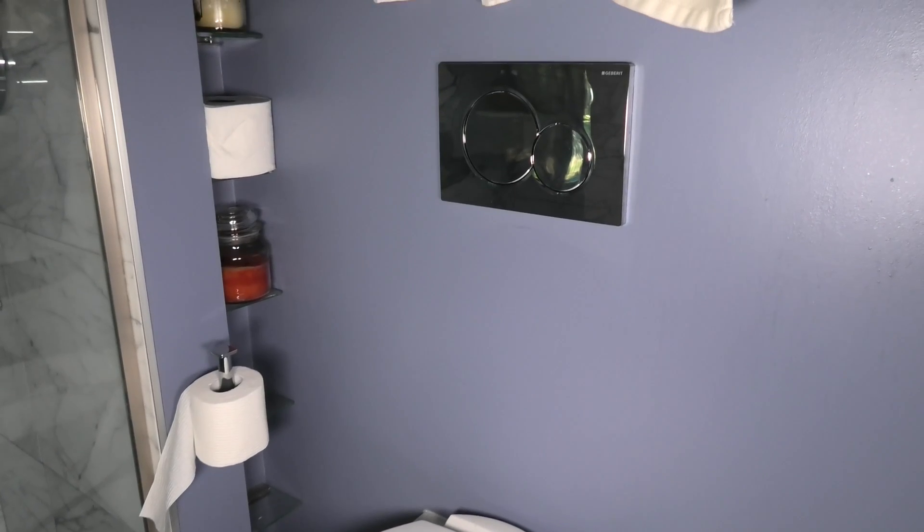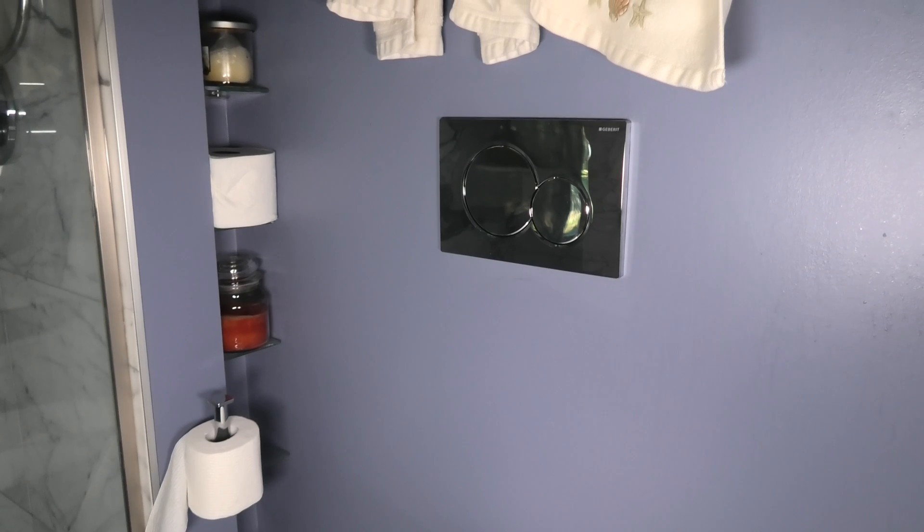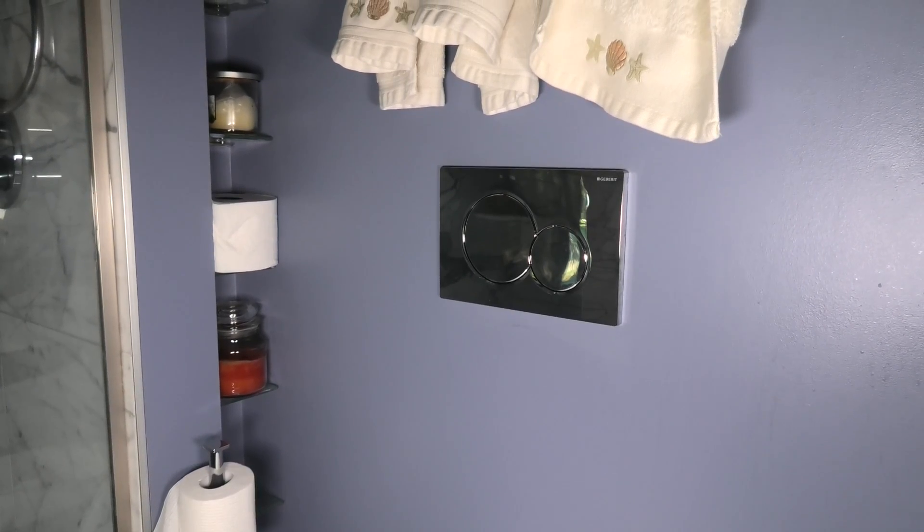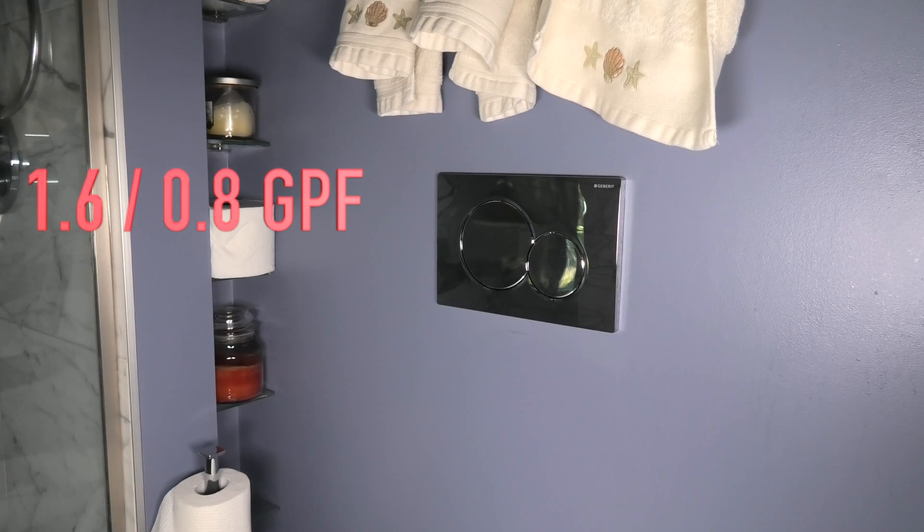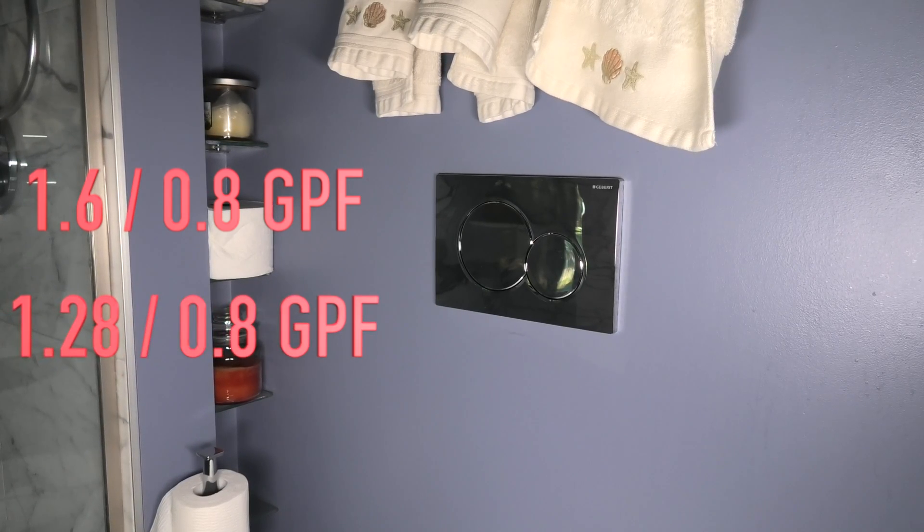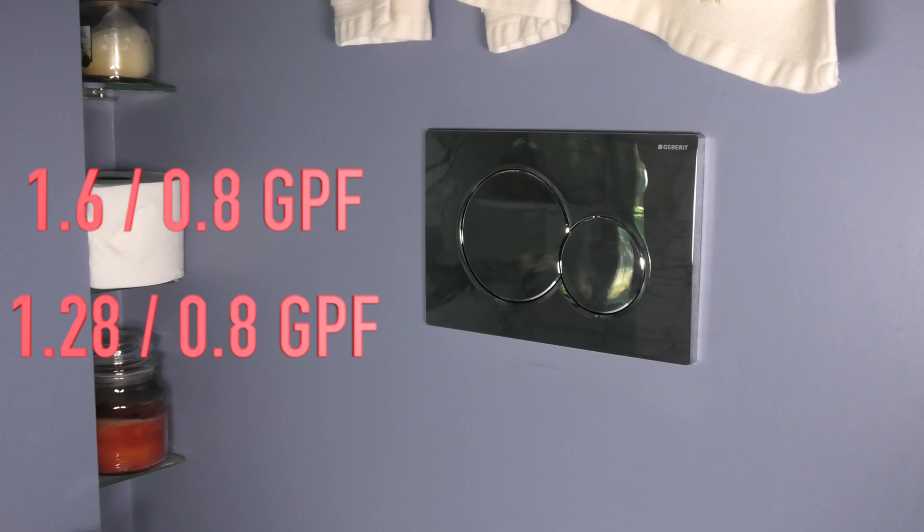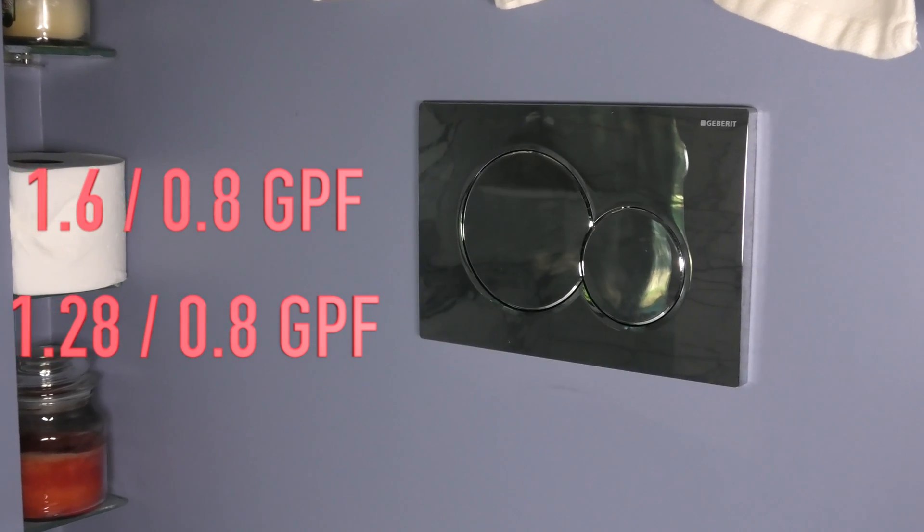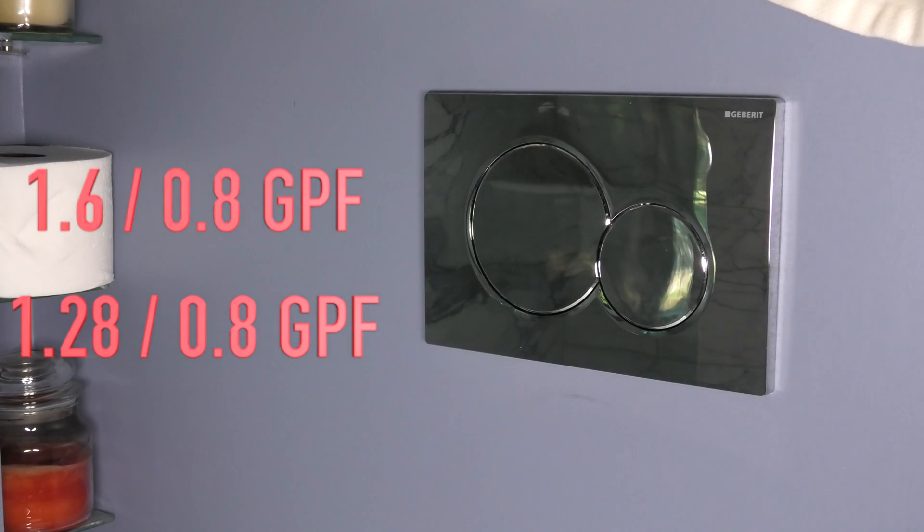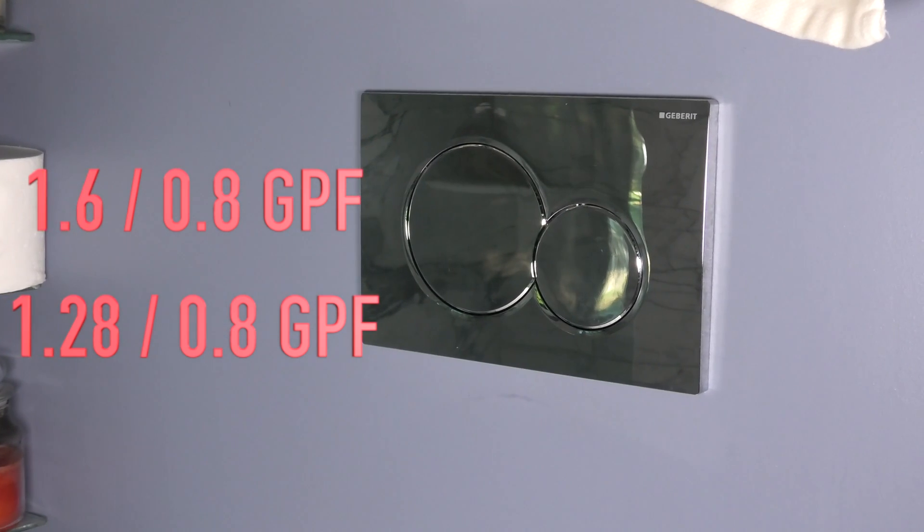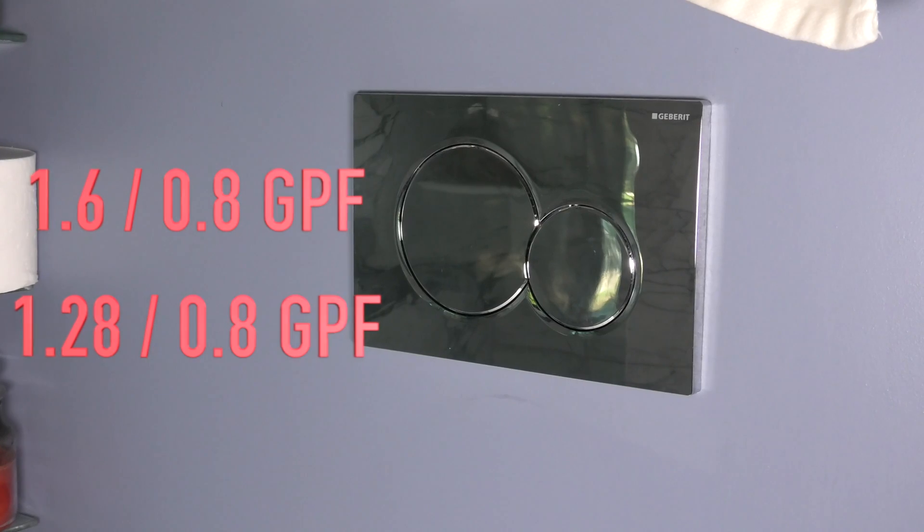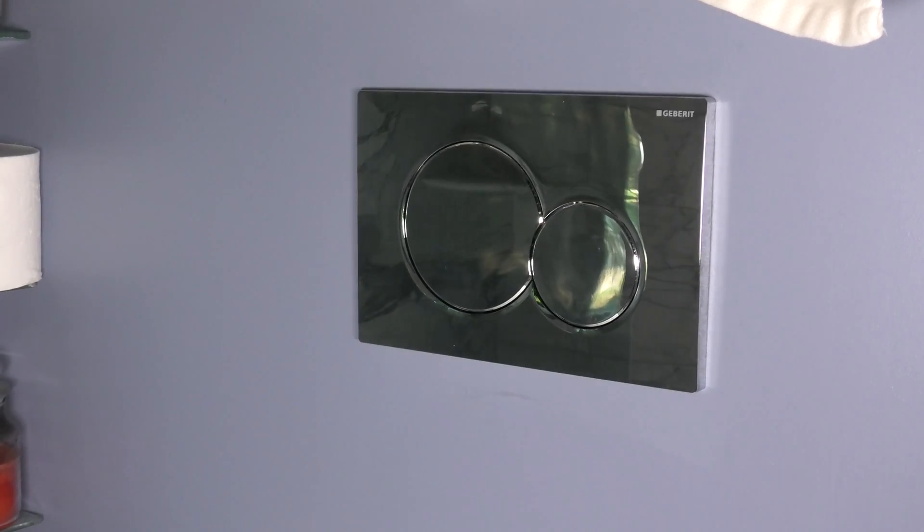With this dual flush model we can either select to flush with 1.6 or 0.8 gallons per flush, or we can alternatively use 1.28 or 0.8 gallons per flush. So you can see that we can only adjust the flush volume for the standard flush. The volume for the smaller flush is always 0.8 gallons.